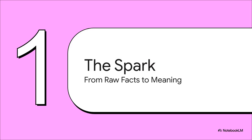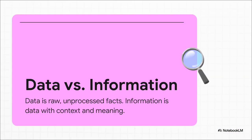Every journey has to start somewhere, and for our data, that journey begins at the very moment of creation — that little spark where raw, boring facts are suddenly given a purpose. First things first, we've got to get one key distinction down. The words 'Maple Street' all by themselves — that's just data. It's raw text, kind of meaningless on its own. But when you put it together as '123 Maple Street, Anytown' for a shipping label, boom, it becomes information. It now has context, it has a job to do. And just like that, by filling out that form, we've created information.